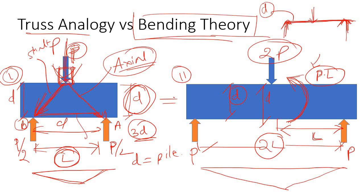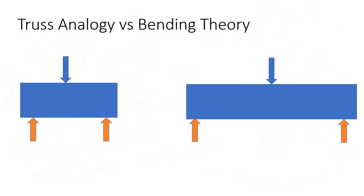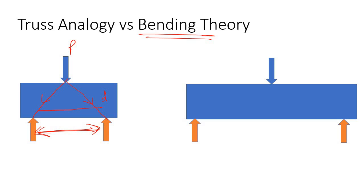If in the case of a pile cap the depth and the distance are not much different, bending theory is not valid. In that case, the applied load is distributed between the two piles in the form of axial force, and a truss is formed where this is the tie and this is the strut. This is also known as the strut-and-tie method.